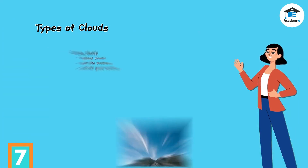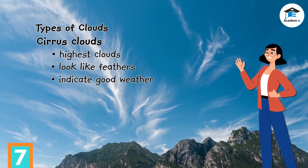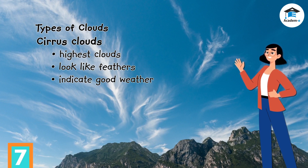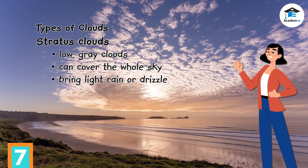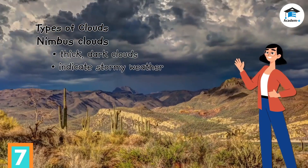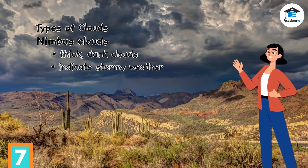Cirrus clouds are the highest clouds. They look like feathers and indicate good weather. Stratus clouds are low, gray clouds that can cover the whole sky. They bring light rain or drizzle. Nimbus clouds are thick, dark clouds that usually indicate stormy weather.